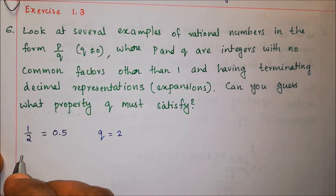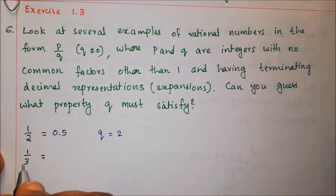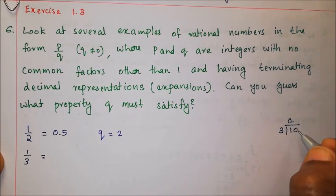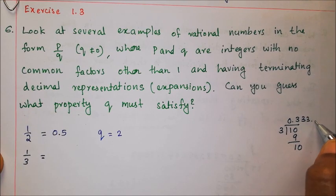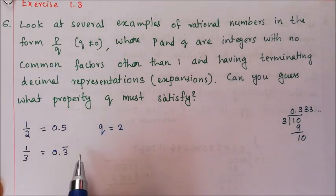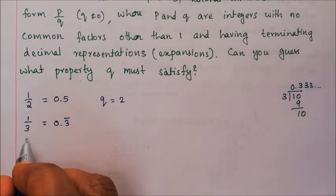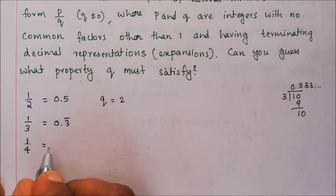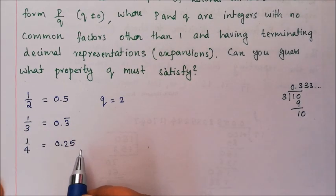For example, 1 by 3 gives a non-terminating decimal, while 1 by 4 equals 0.25, which is a terminating decimal. So q equals 4 gives a terminating result.